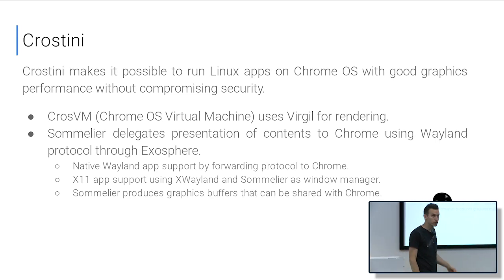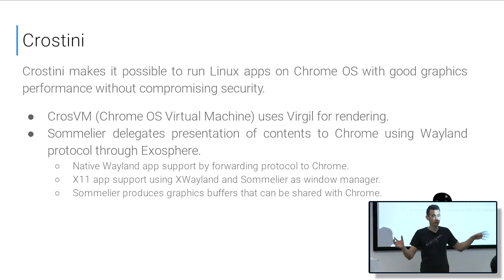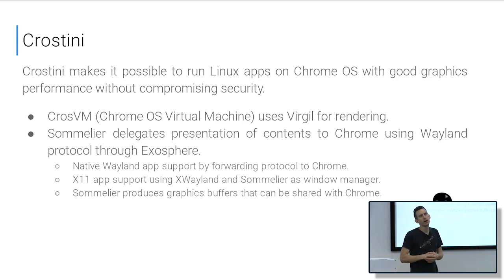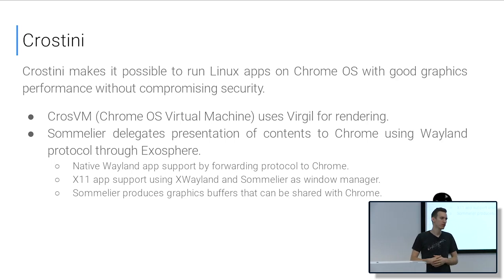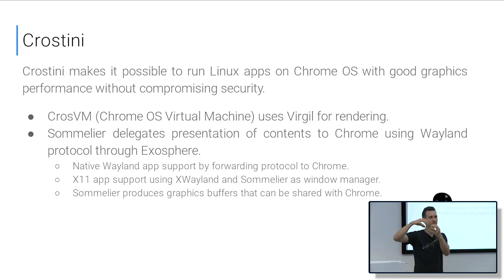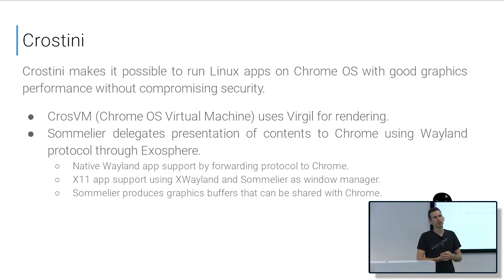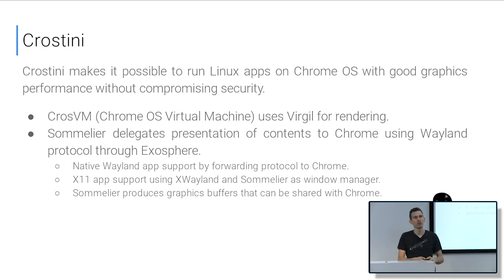For Crostini — our Linux virtual machine application support — this uses full virtualization with its own private kernel. We have an extra layer that virtualizes the graphics and runs on top of the host GPU driver implementation. This is called Virgil, which implements 3D virtualization. We also have a daemon called Sommelier, which delegates presentation to Chrome in a way very similar to what the Hardware Composer does on the Android side.